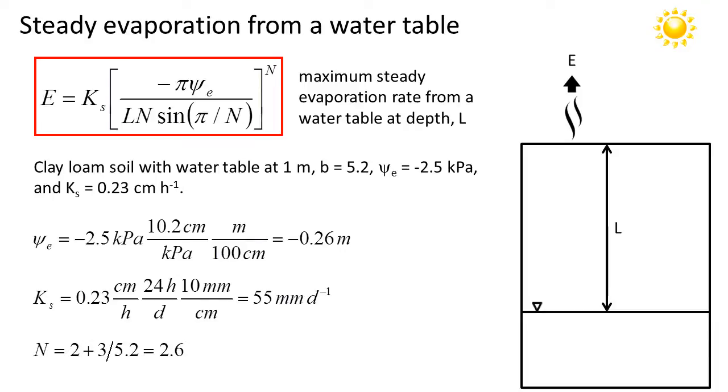Finally, I need to calculate the exponent N, which is just simply 2 plus 3 divided by 5.2, which evaluates to 2.6.